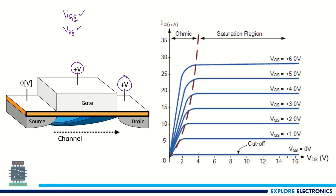If you look at the current versus drain voltage characteristics, this is ID in milliamps and this is VDS in volts. The transistor will be operated in three regions: cutoff region, ohmic region, and saturation region. The ohmic region and cutoff region of operation will be used for the transistor when it is used as a switch.